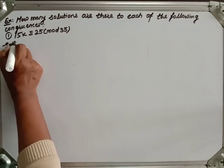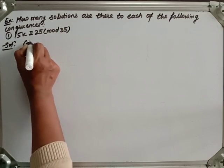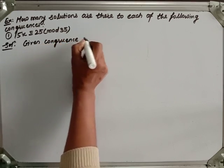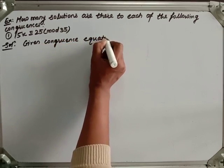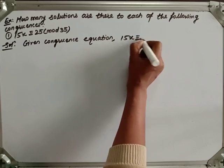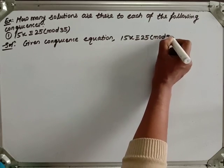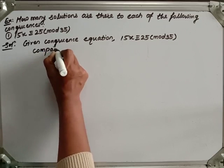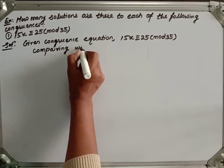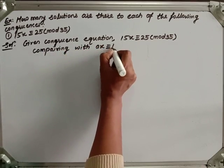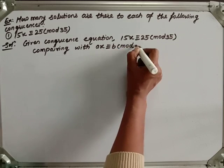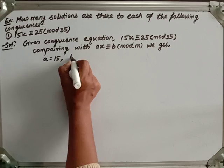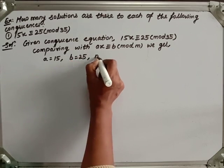Let's see the solution. The given congruence equation is 15x ≡ 25 (mod 35). Comparing with ax ≡ b (mod n), we get a equal to 15, b equal to 25, and m equal to 35.